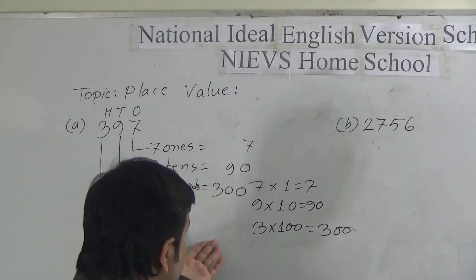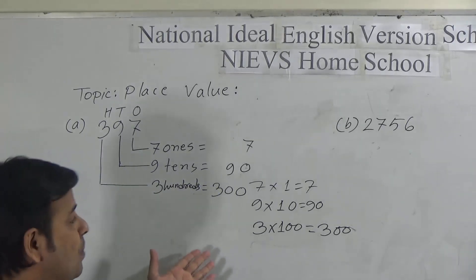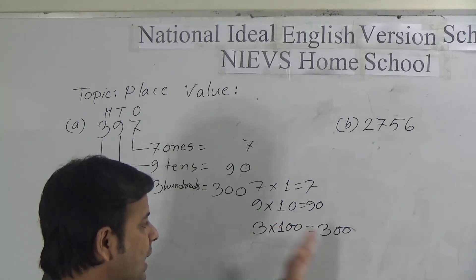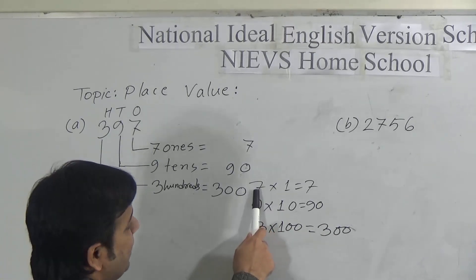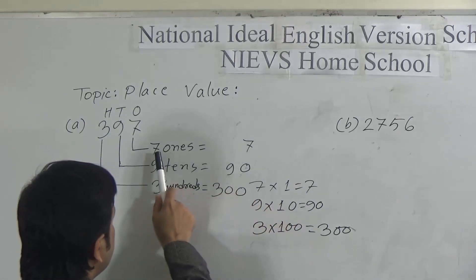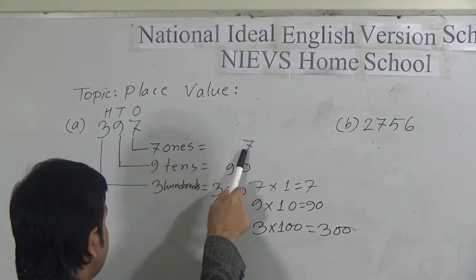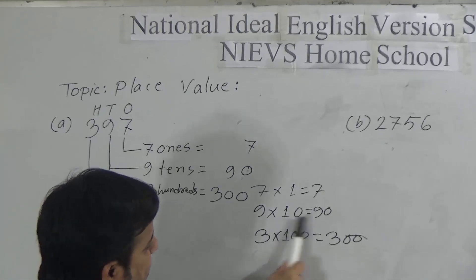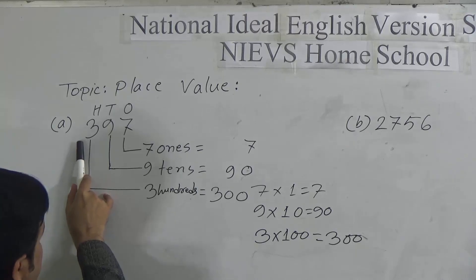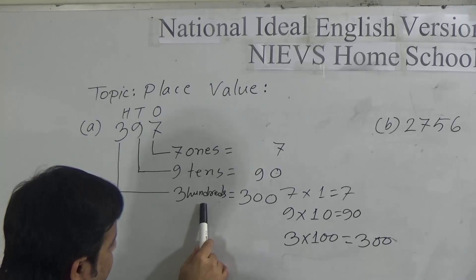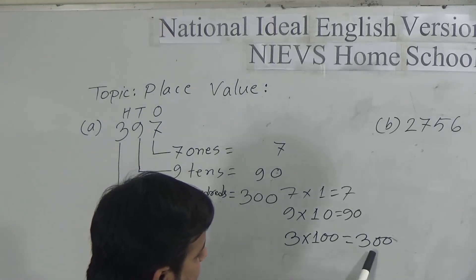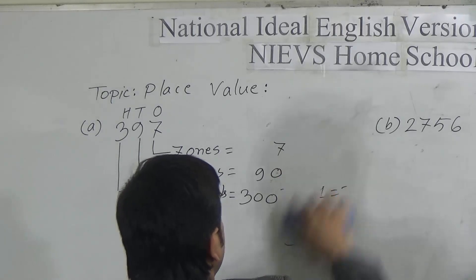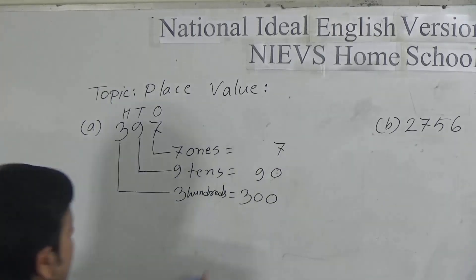Dear students, I hope you have understood how to determine the place value. Every digit — if we multiply by the position, we will get the value, and that value is known as the place value. Seven is in ones position, multiply by one, we get seven. Nine is in tens position, multiply by ten, we get ninety. Three is in hundreds place, multiply by one hundred, we get three hundred. These are the place values of all the digits of the first number.